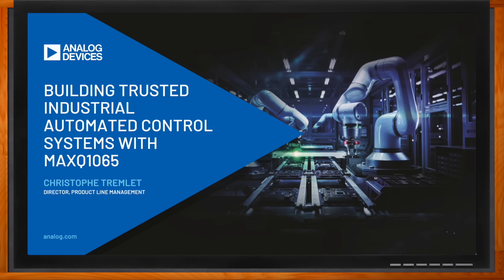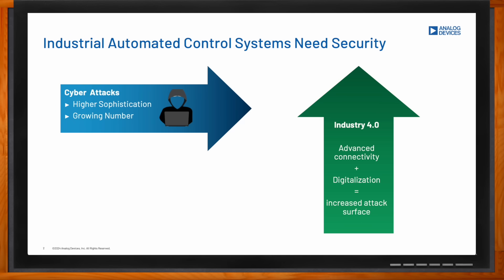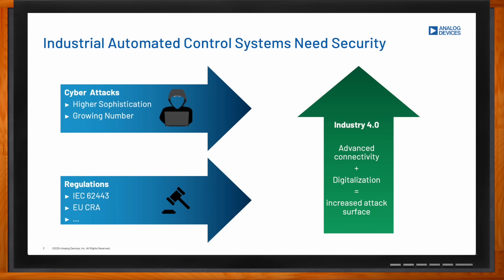Hi Christoph, thank you so much for joining me today. We're talking about how we can build trusted automated control systems. There is a growing need for security for these types of systems. In the industry today we're moving to Industry 4.0, which means connectivity is getting more advanced and there is more digitalization — all of which increases the attack surface. We're also seeing hackers getting more sophisticated, and there are upcoming regulations such as IEC 62443, the security standard for industrial automated control systems, and the European Union Cyber Resilience Act.